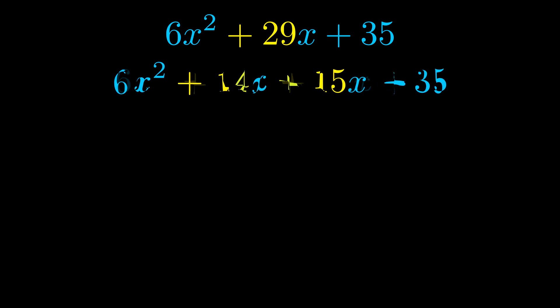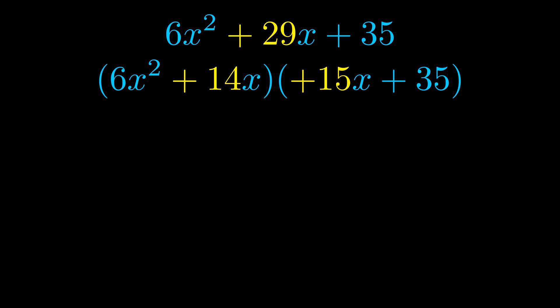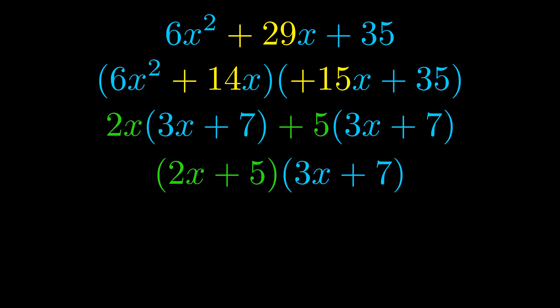Once we've done this we go ahead and put parentheses around the first term and the last term and we do that so that we can take the greatest common factor out of both terms. We can see the greatest common factor is now outside in green. Notice also how what remains inside of the parentheses is the same in both cases. The blue values are the same.